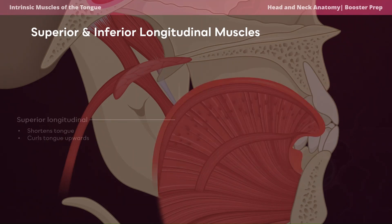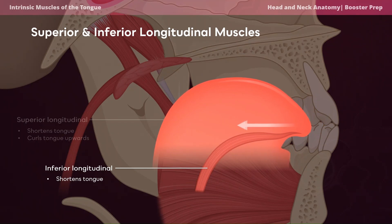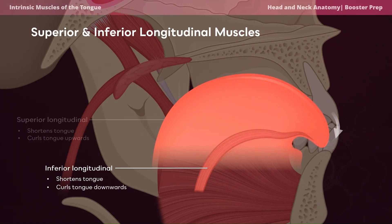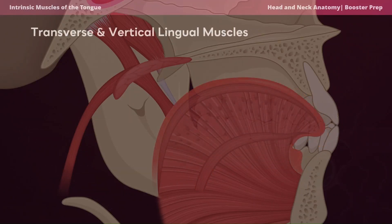The inferior longitudinal muscle also works to shorten the tongue by pulling it inwards. Similarly, the inferior longitudinal muscles run in an anterior to posterior fashion, which allows these muscles to curl the tongue downward.